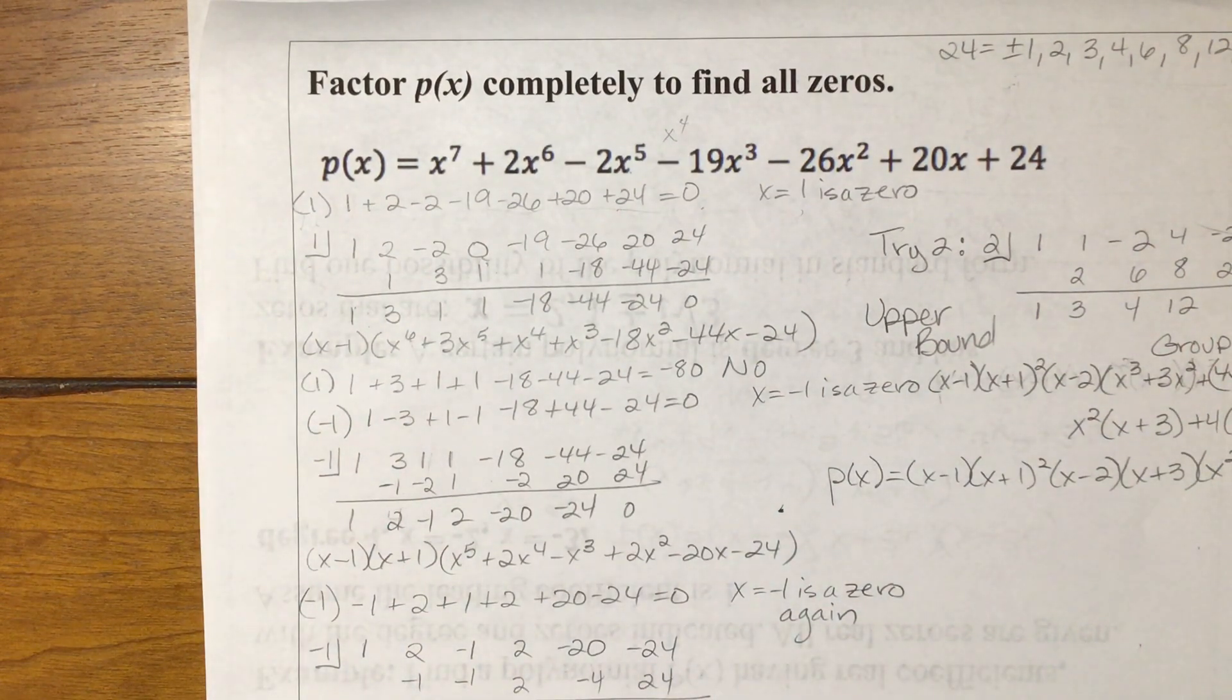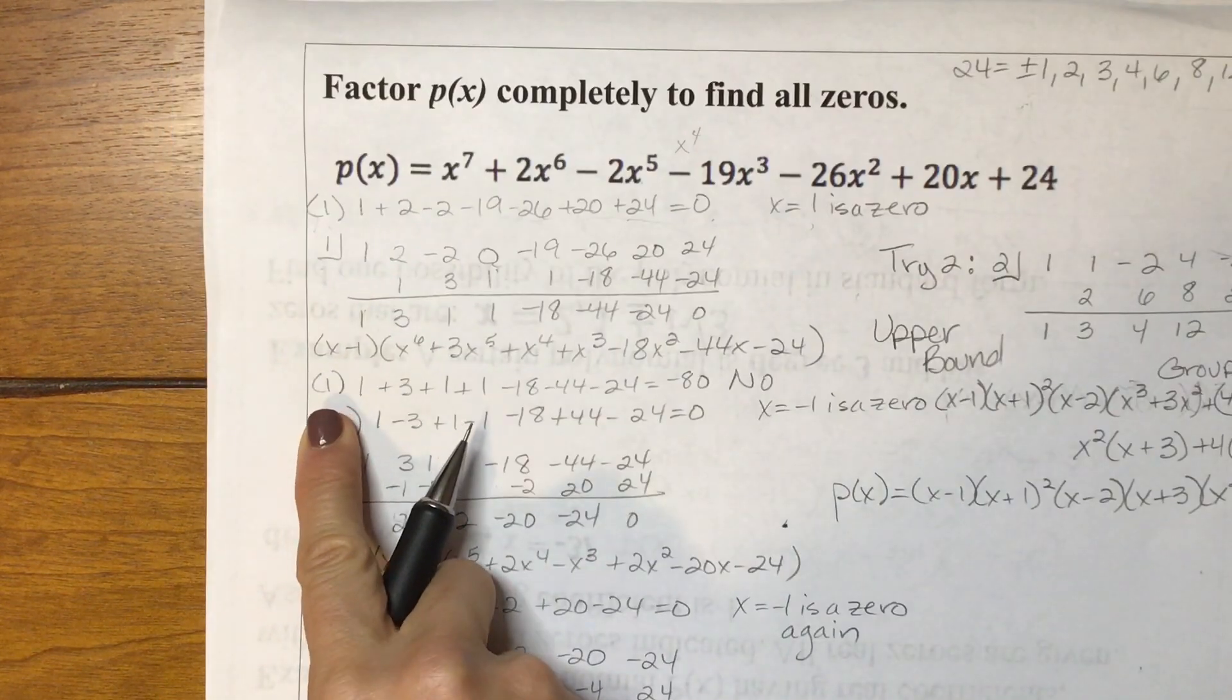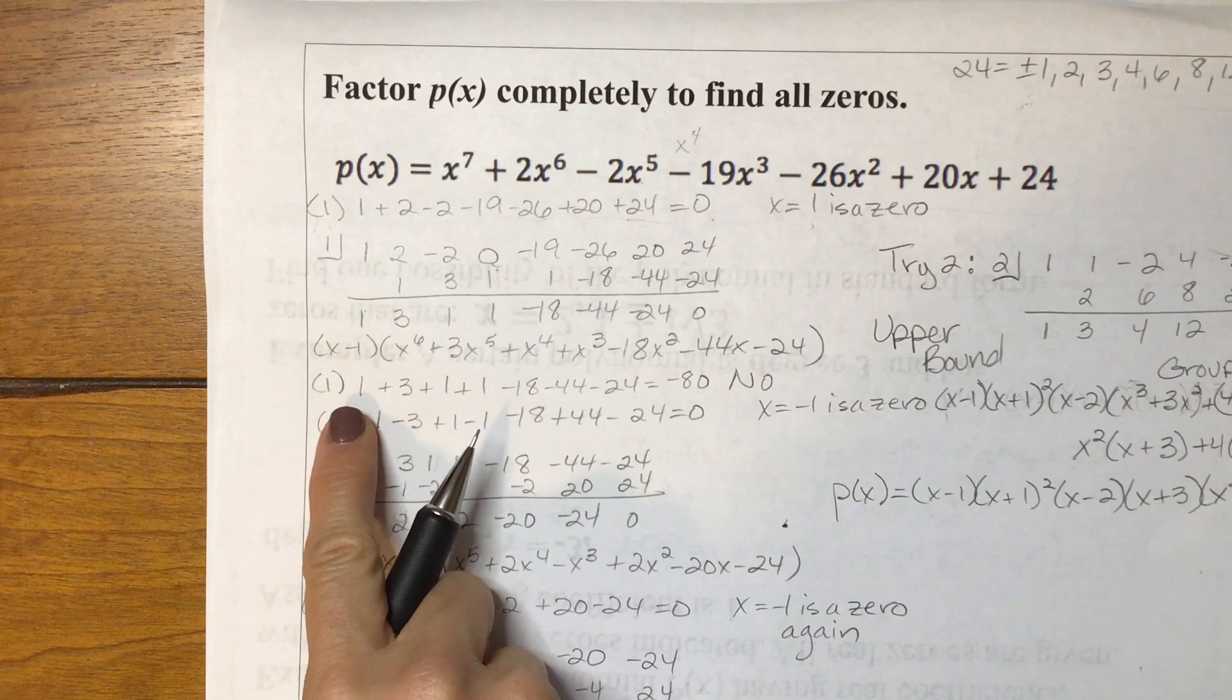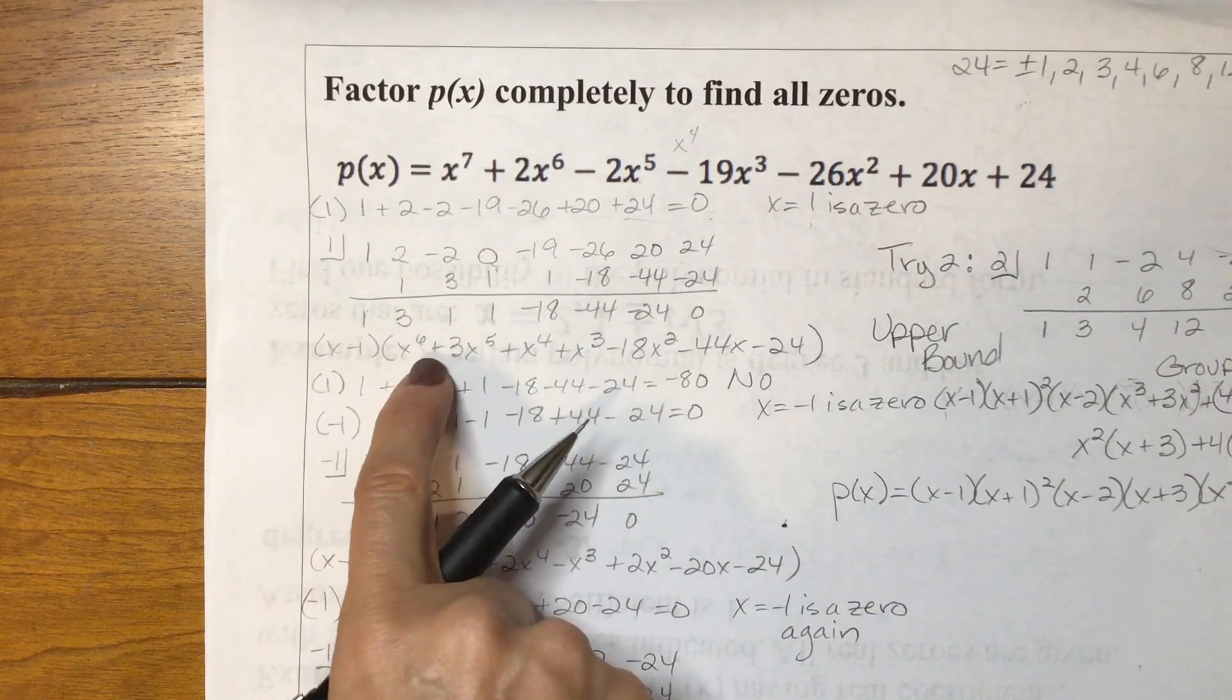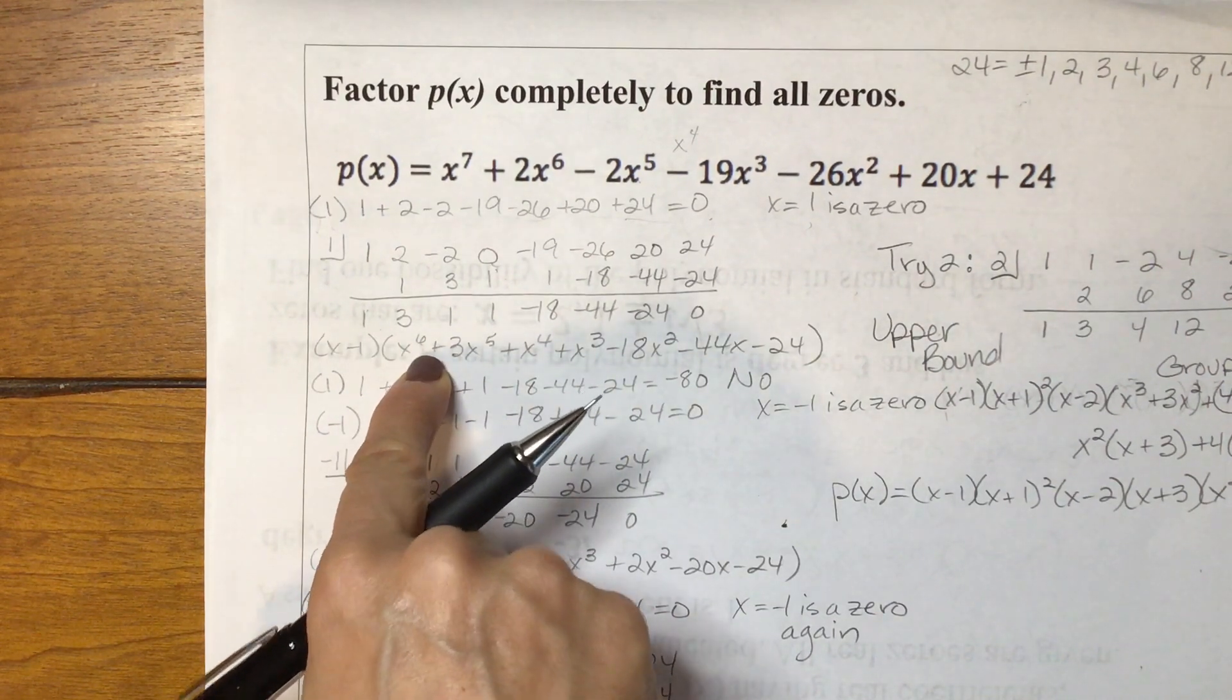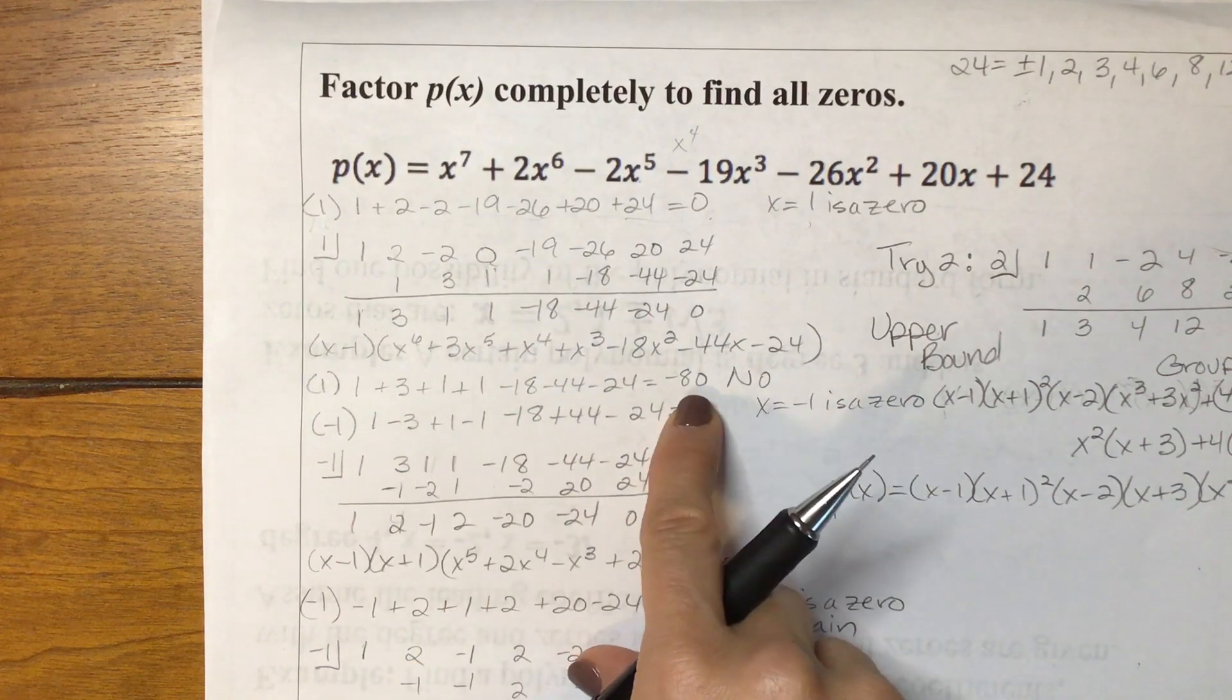It's fine to test your 1 again, especially with something this long. So I tested my 1 again. And I added up all of the coefficients from my resulting x to the 6th polynomial, and I got negative 80.